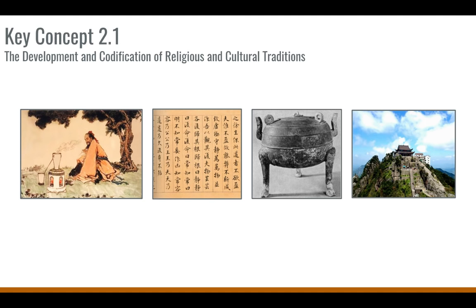Taoists were very interested in alchemy, in trying to find elixirs for eternal life. For example, the Qin emperor Shi Huangdi, on the search for immortality, ends up dying of mercury poisoning. Taoism also influenced cultural traditions such as poetry — Taoist poetry is very prominent, and the poetry of Laozi, the founder of Taoism, can still be read today. Along with alchemy, metallurgy and new metallurgic practices come out of Taoism, as they are very interested in the natural world.